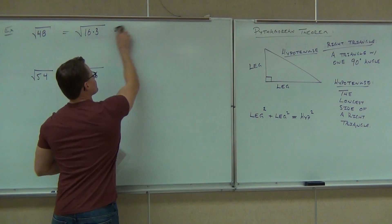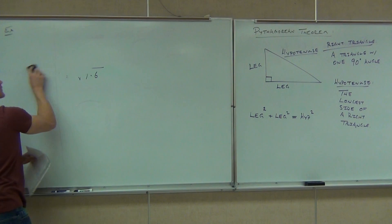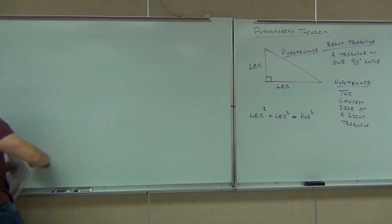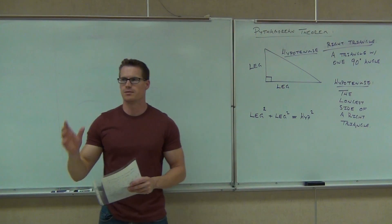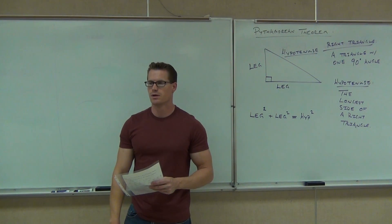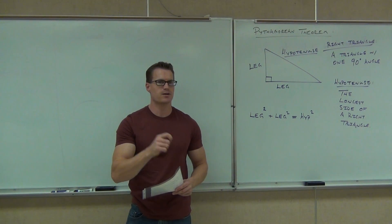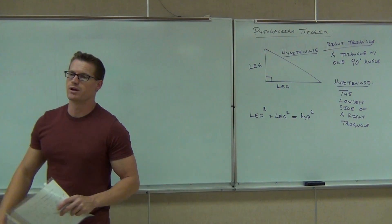3, 4, 5. What was that? 3, 4, 5. Sure, 3, 4, 5, 6, 8, 10, 5, 12, 13. There's 10, 24, 26. There's a lot of different Pythagorean triples that work according to the Pythagorean theorem. We're going to learn some right now.